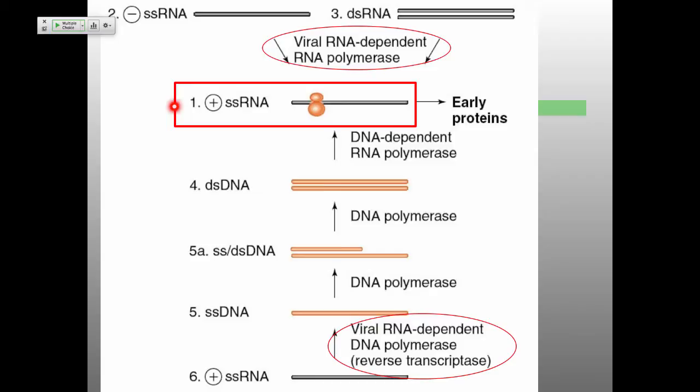These are single-stranded RNA viruses, which means the positive strand is packaged inside the virion. As soon as that strand is released inside the cell, the cellular translation machinery can translate it and make all of the proteins needed — first for replication of the genome, then for making all of the virion proteins.